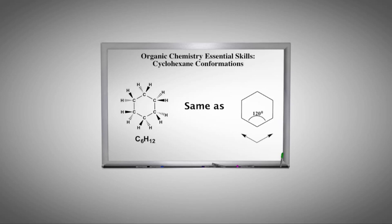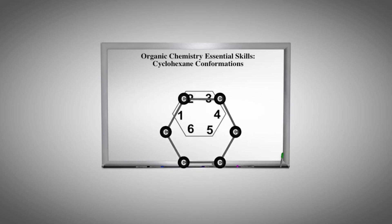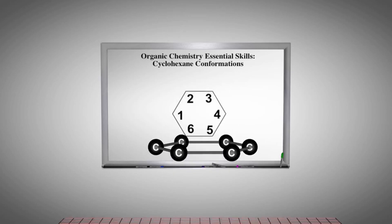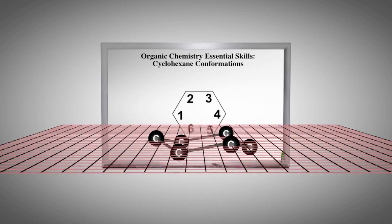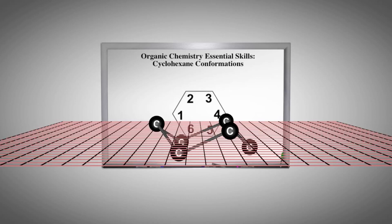However, all carbons are sp3 within the cyclohexane ring system. Thus, the ideal angle for each carbon should be 109.5 degrees. The 109.5-degree ideal angle is accomplished by folding the molecule into three dimensions as shown. The ring is puckered out of the plane.